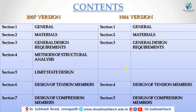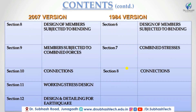The contents of the 2007 revision compared to the 1984 older version show general changes. Section 1 General is the same in both. Section 2 Material is the same. Section 3 General Design Requirements is the same. Section 4 in the 2007 code is new — Method of Structural Analysis — and Section 4 also introduces Limit Design. Section C covers Design of Tension Members; here Section 4 of the older code is Design of Tension Members. In between, two new sections have been added. Section 7 Design of Compression is the same in both codes. Section 8 Design of Members Subjected to Bending is the same. Section 9 Members Subjected to Combined Forces is covered in the older code. Section 10 is Connections, and Section 8 is also Connections in the older version — those sections are the same.